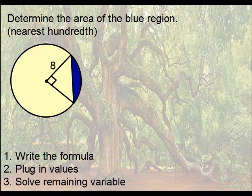Okay, here is a first example. Determine the area of the blue region to the nearest hundredth. Now you will note that it doesn't say determine the area of the segment, so it is up to you to recognize that it is a segment and also to recognize what the formula should be. Let's first write the formula - that would be our first step.